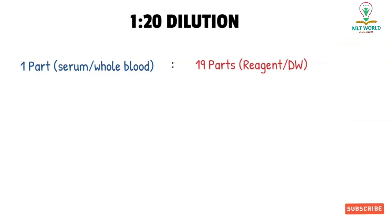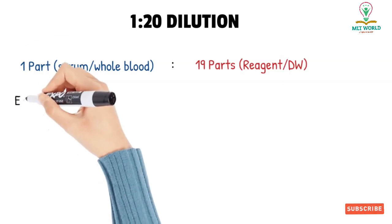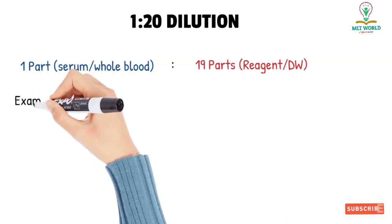A 1:20 dilution means you need one part of serum or whole blood and 19 parts of reagent or distilled water, as these two things are mostly needed in our laboratory.